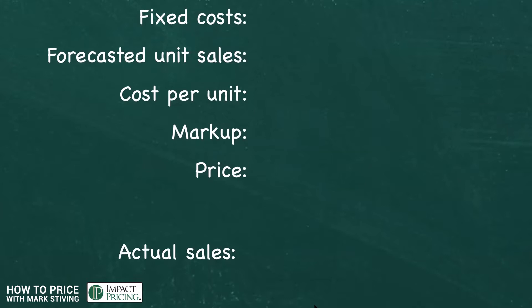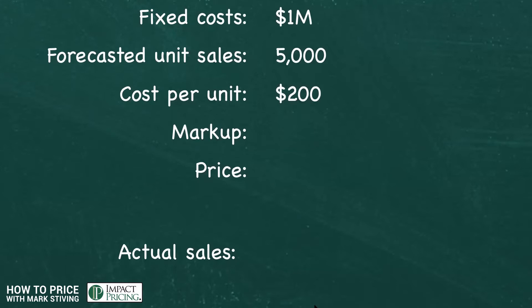We've got a company that has periodic fixed costs of a million dollars. This could be quarterly, monthly, annual — doesn't matter. I'm going to use the word quarter just to be consistent. So quarterly they've got a million dollars. They forecasted that they're going to sell 5,000 units every quarter. If you do the math — a million divided by 5,000 — you get $200 per unit. Now, of course, we want a 100% markup because we're cost-plus pricing. What does that make our price? It makes our price $400.